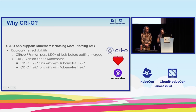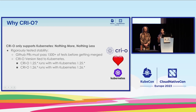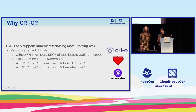We rigorously test CRI-O — we have over 1,500 tests running, including the CRI-O test suites, Kubernetes test suites, OpenShift test suites, and Kata tests as well. We test rigorously to ensure that whenever Kubernetes has a new release, we don't break it. CRI-O versions walk in lockstep with Kubernetes versions. If you're using Kubernetes 1.26, CRI-O 1.26 is what works with it. We just released 1.27 yesterday.